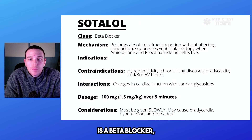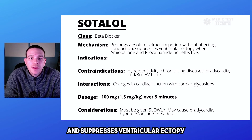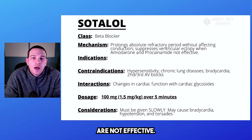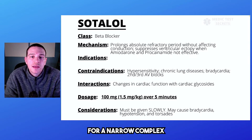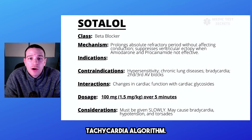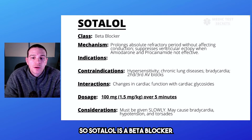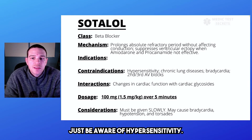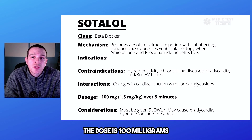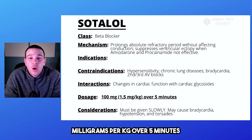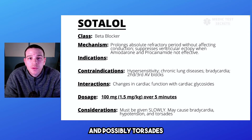Next, we have sotalol, which is a beta blocker. It prolongs the absolute refractory period without affecting conduction and suppresses ventricular ectopy when amiodarone and procainamide are not effective. We usually use this following adenosine — if adenosine is ineffective for narrow complex tachycardias, per the ACLS tachycardia algorithm, we can use beta blockers or calcium channel blockers. Contraindications include hypersensitivity, chronic lung issues, bradycardia, and second-degree AV blocks. The dose is 100 milligrams or 1.5 milligrams per kilogram over five minutes. This medication must be given slowly, as it can cause bradycardia, hypotension, and possibly torsades.